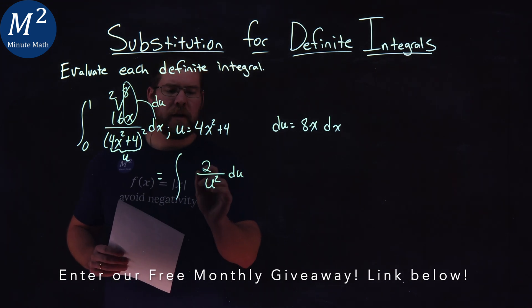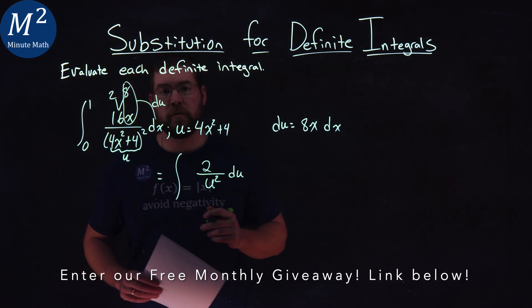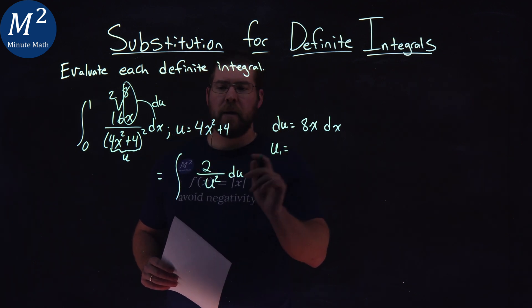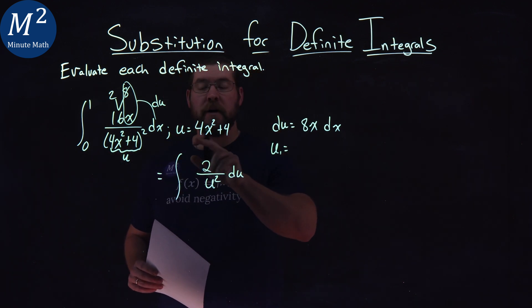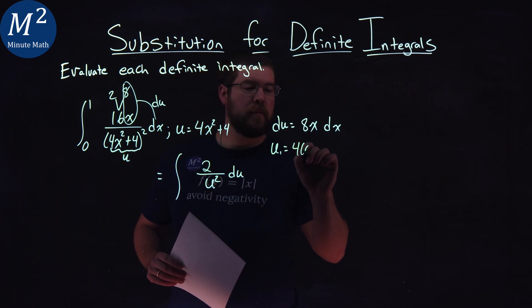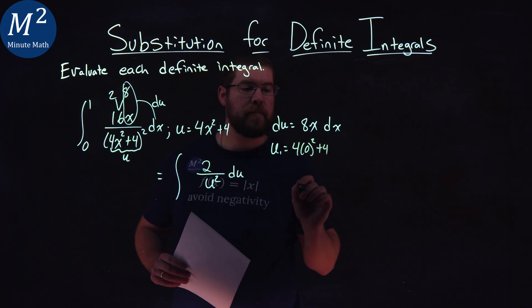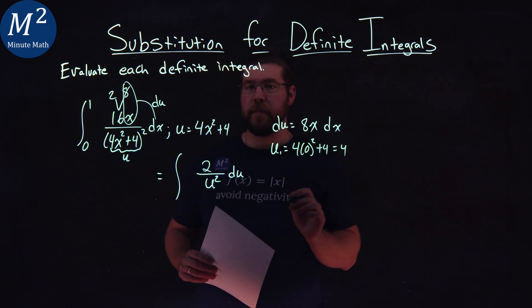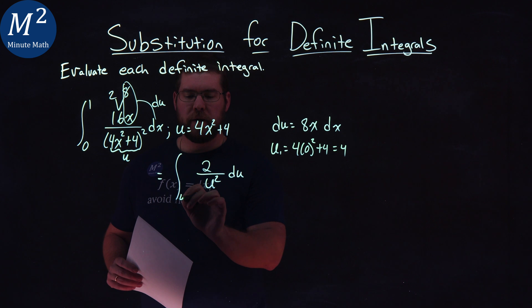So I go back to my u value here. I'm going to plug in 0 for x to find its equivalent in terms of u. 4 times 0 squared plus 4. Well, 0 squared is 0, times 4 is 0, plus 4 is 4. Not bad. So our lower bound here is 4.